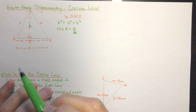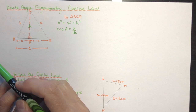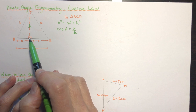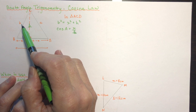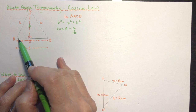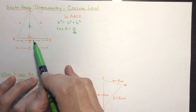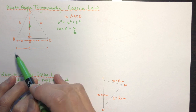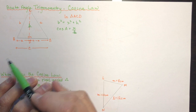We have our acute triangle ACB. We've dropped a perpendicular, just like we did with the sine law, and made a point called D. We've labeled the sides opposite the vertices. To accommodate the two new parts of the triangle, we've called the length from A to D as x, and the length from D to B as c minus x. For instance, if c is 5 and x is 2, then that length is 3.